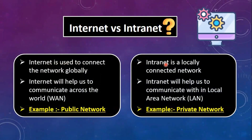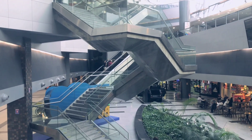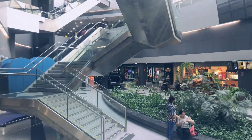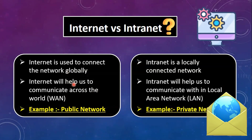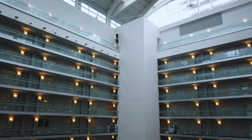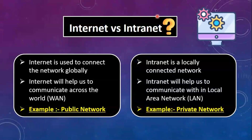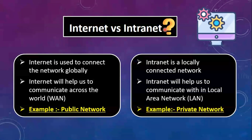For example, WAN is wide area network, LAN is local area network. Internet is a public network. Intranet is a private network. When you communicate between two buildings, you connect either via a LAN cable or fiber cable — that means internet. Intranet is a local connection.